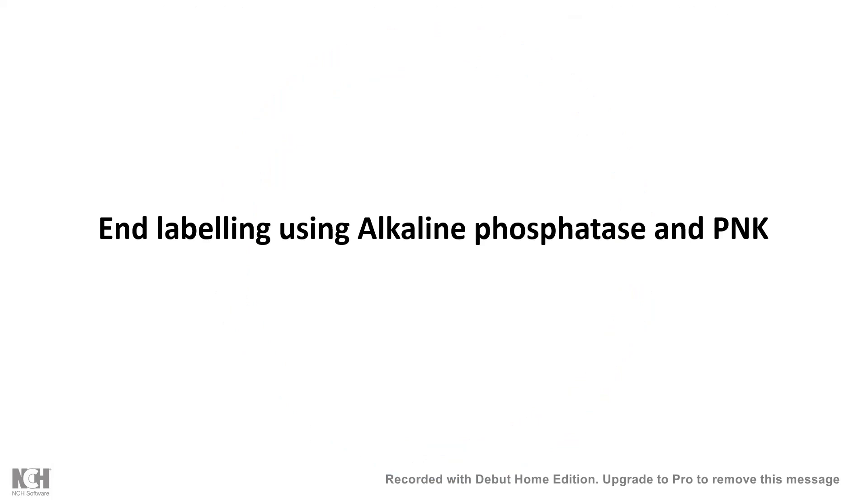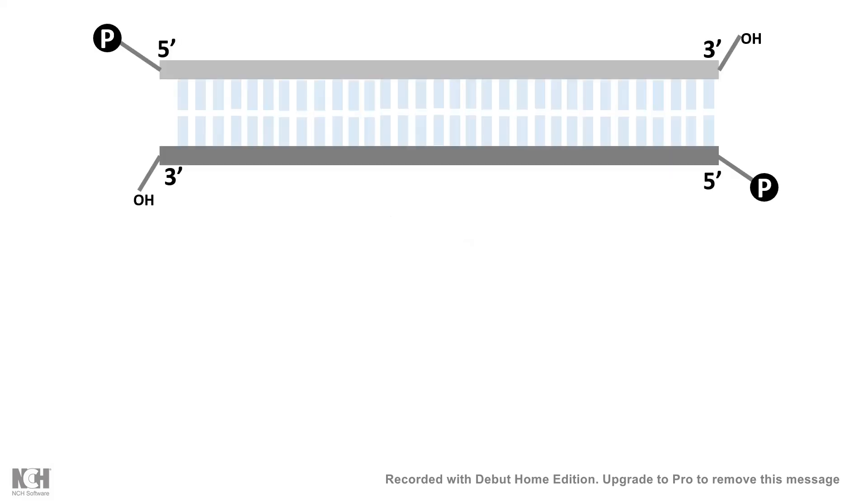Now, end labeling could be achieved by the usage of alkaline phosphatase and PNK in combination. So, let us look at it. Let's say this is a DNA and we want to label the end of this DNA. So, we know the 5' end, there would be phosphate group.